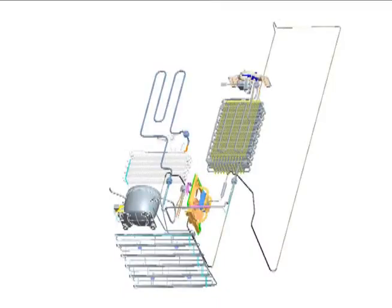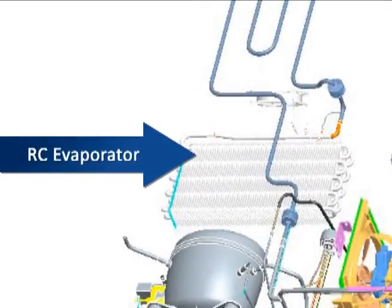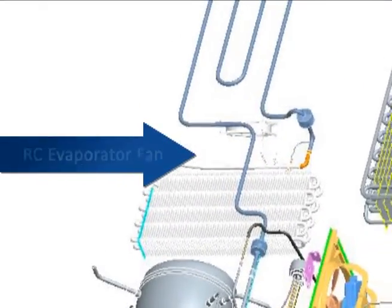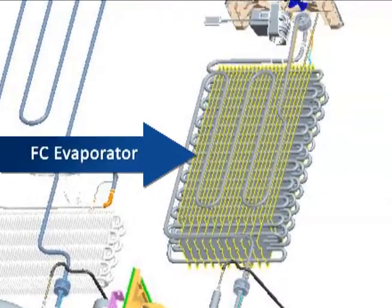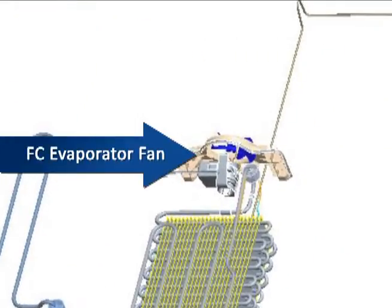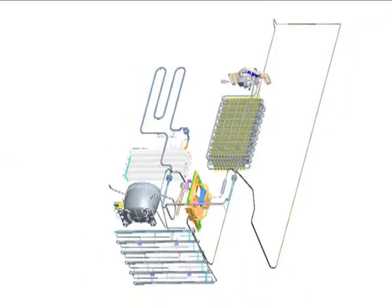Let's begin by identifying the cooling system components. In the refrigeration compartment, we find the RC evaporator and RC evaporator fan. In the freezer compartment, we find the FC evaporator and the FC evaporator fan. These two evaporators and fans operate independently from each other. Think of the two compartments as individual refrigerator systems controlled by a main board making decisions based on temperature sensing thermistors and the program software.